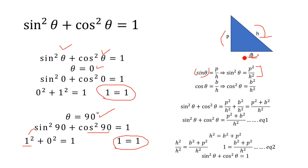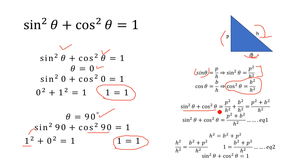The base is denoted by b and hypotenuse by h, so cos theta equals b divided by h. Taking the square of this, we get cos squared theta equals b squared divided by h squared. The left-hand side becomes sine squared theta plus cos squared theta, and the right-hand side becomes perpendicular squared over hypotenuse squared plus base squared over hypotenuse squared. Taking the LCM of hypotenuse squared,